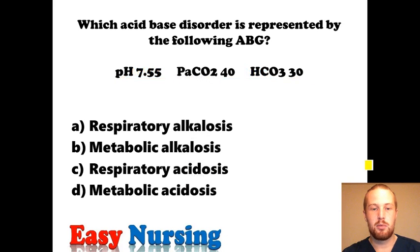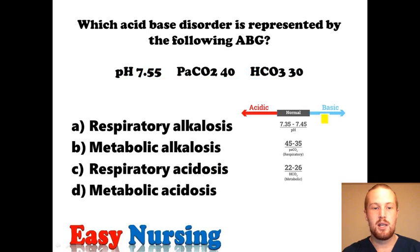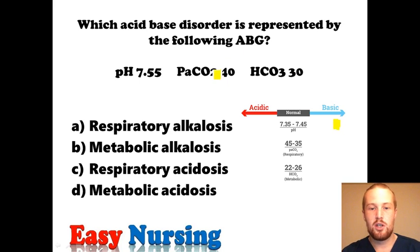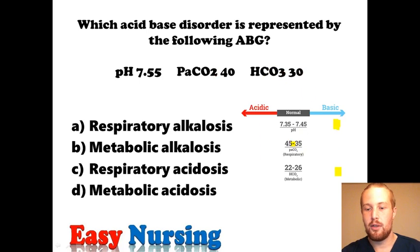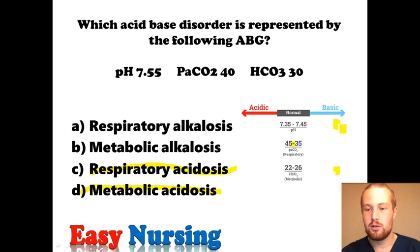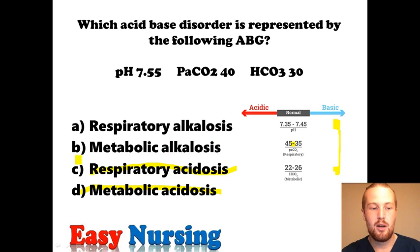Let's take a look at this problem. We see a pH of 7.55, which is basic. CO2 of 40, right in the middle. And a bicarb of 30. What matches the pH? We know without a doubt it's going to be alkalotic. What matches that? It looks like it is the bicarb. Bicarb is metabolic, so we have metabolic alkalosis as our answer.